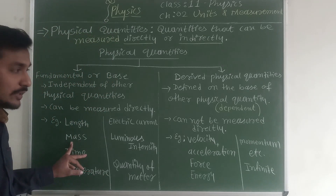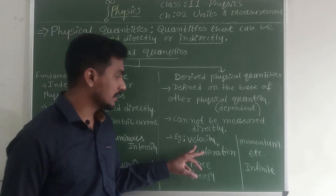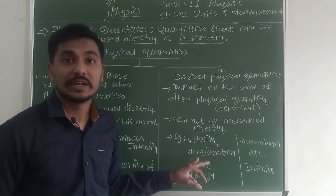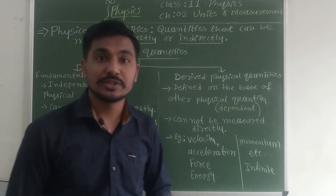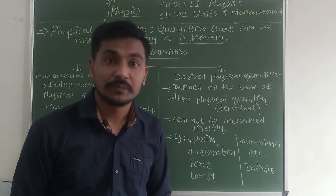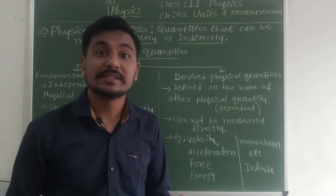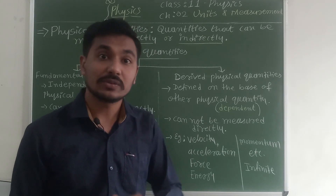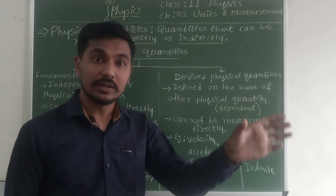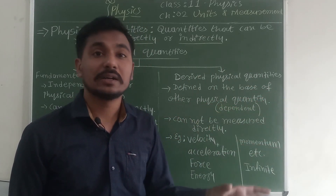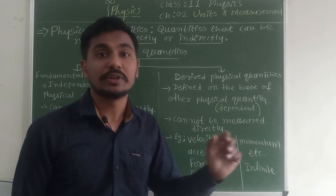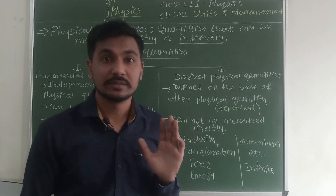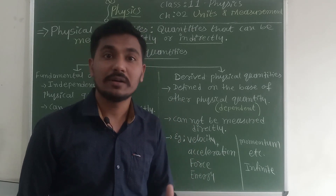I can measure the mass. I can also measure the velocity. I can also measure the acceleration. But I cannot measure emotions. I cannot measure love. I cannot measure hate. All these things I cannot measure directly or indirectly. So love, emotions, hate — all are non-physical quantities. Physical quantities are those quantities which can be measured either directly or indirectly.